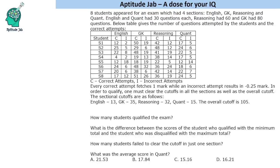Hello everyone, welcome to Aptitude Lab. This is a data table which says that eight students appeared for an exam which had four sections: English, GK, Reasoning, and Quant. English and Quant had 30 questions each, Reasoning had 60, and GK had 80 questions. The table gives the number of questions attempted by the students and the correct attempts.